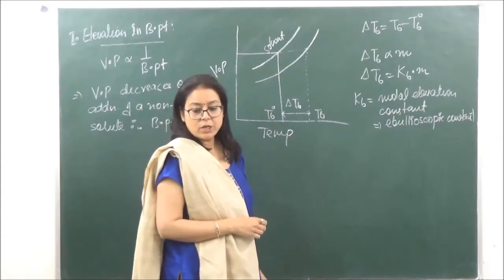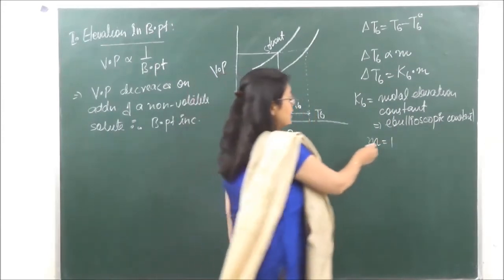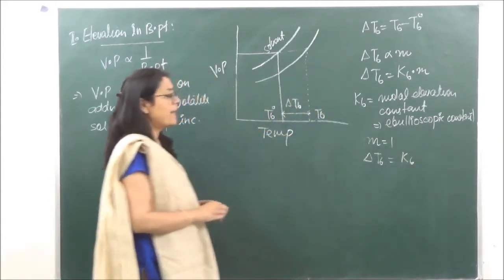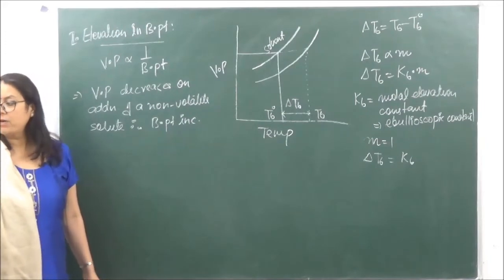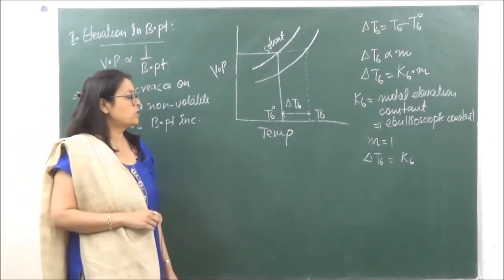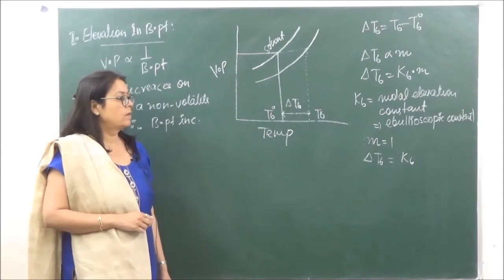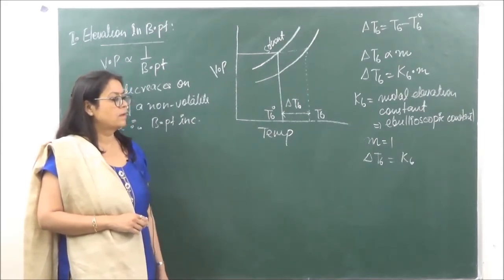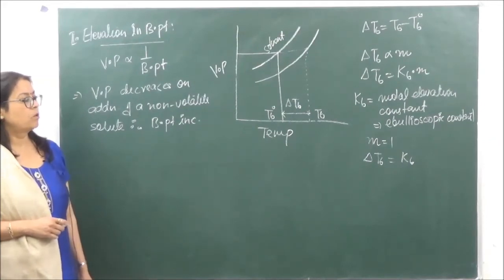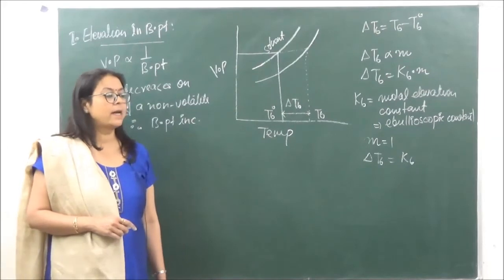To define Kb: when molality equals 1, delta Tb = Kb. So the molar elevation constant (Kb) of a solution is the elevation in boiling point when the molality of the solution is taken as 1 molal. Kb is different for every solvent — for water, Kb = 0.52 K/mol; for benzene, Kb = 2.53 K/mol.